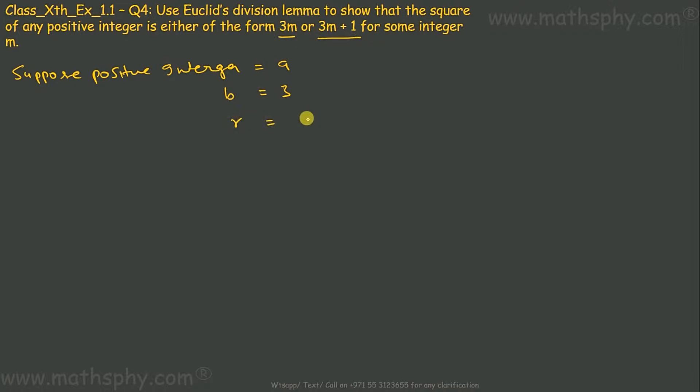R would be either 0, 1, or 2. In any case, R has to be more than or equal to 0 and less than 3, or less than B.